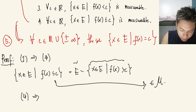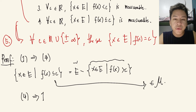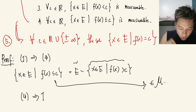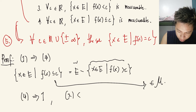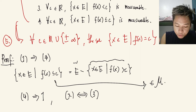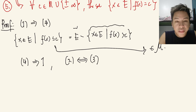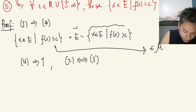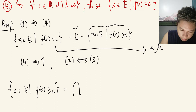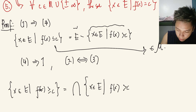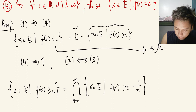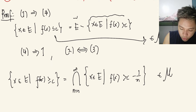It's also pretty obvious that 2 if and only if 3, in the sense that statement 3 can be written as e minus statement 2, and they're all measurable. Observe that since a countable intersection of measurable sets is measurable, the set {x∈e : f(x) ≥ c} is the countable intersection of {x∈e : f(x) > c − 1/n} for n from 1 to infinity. So this set is measurable, which tells us that 1 implies 2.